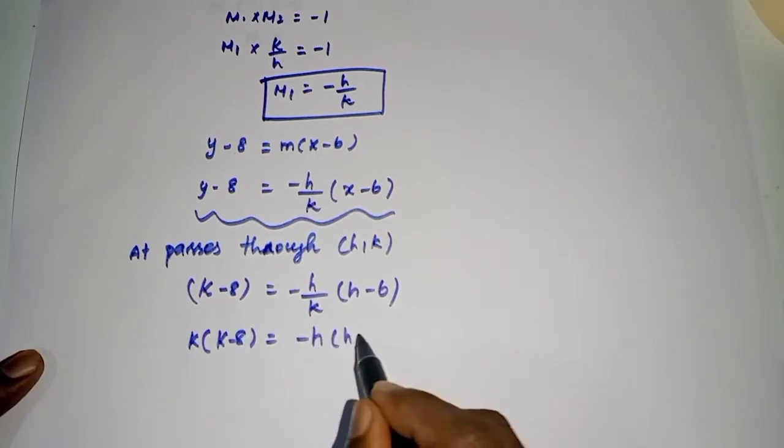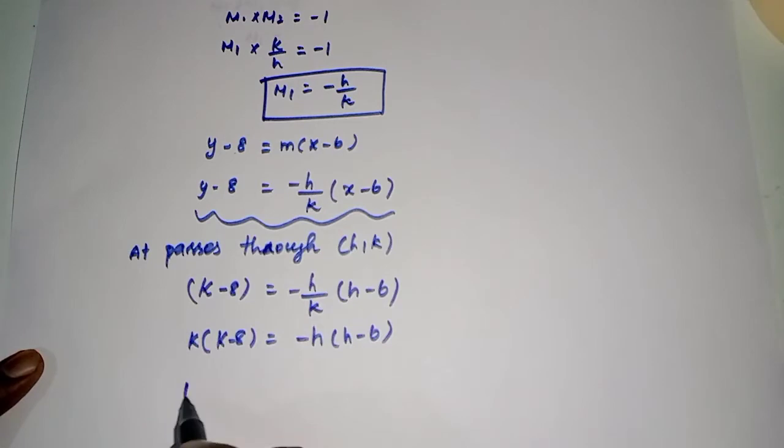Cross multiply: ky - 8k = -h(x - 6), which gives ky - 8k = -hx + 6h. So k² - 8k = -h² + 6h.